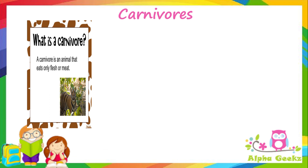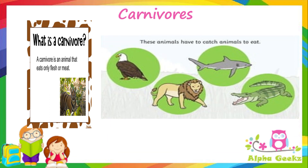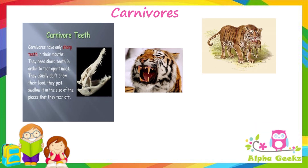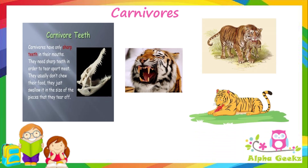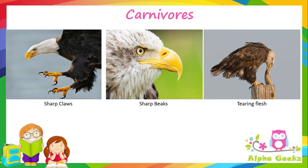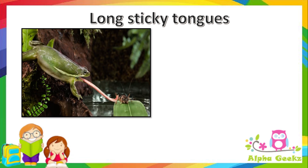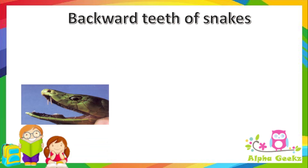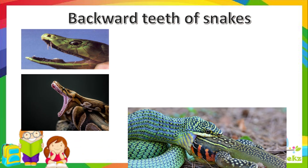A carnivore is an animal that eats only the flesh of other animals. They have to catch other animals to eat. Carnivores have sharp teeth called canines, which are used for hunting and tearing the flesh of their prey. They usually don't chew their food — they just swallow it in the size of the pieces they tear off. Flesh-eating birds like eagles have sharp claws to catch their prey and sharp beaks to tear their flesh. Frogs and lizards have long sticky tongues to catch prey. Snakes have hundreds of backward-facing teeth that help to swallow the prey.